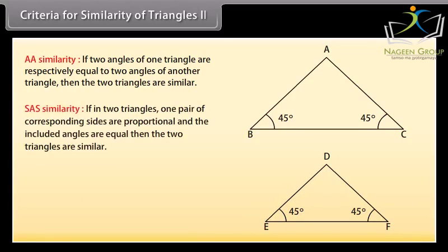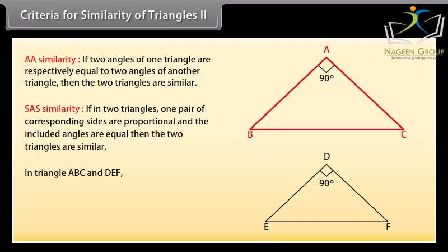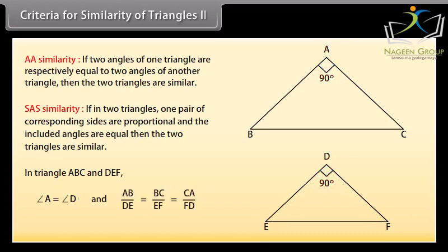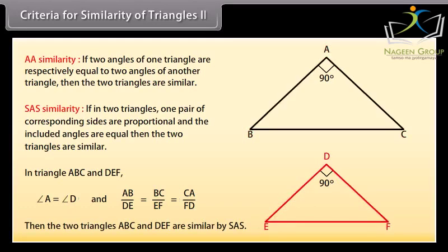SAS similarity: If in two triangles, one pair of corresponding sides are proportional and the included angles are equal, then the two triangles are similar. In triangles ABC and DEF, if angle A equals angle D and AB upon DE equals BC upon EF equals CA upon FD, then triangles ABC and DEF are similar by SAS.